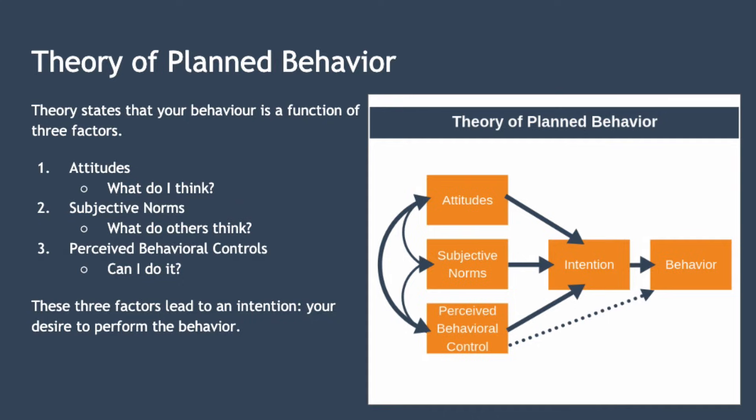Next, we have subjective norms. These look at what others in your social circle — the people that you interact with — think about the behaviour. Your behaviour is, to some extent, shaped by what others around you believe, particularly those close to you. So if people in your workplace took the course and found it to be beneficial, then you are more likely to want to take that course. In short, subjective norms answer the question: what do others think about the behaviour?